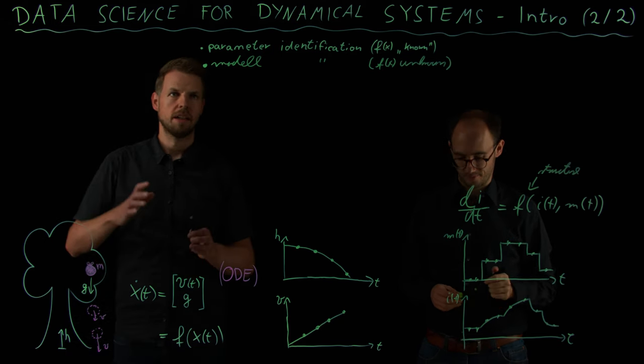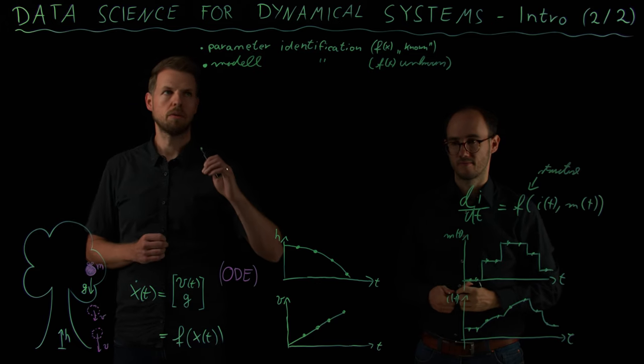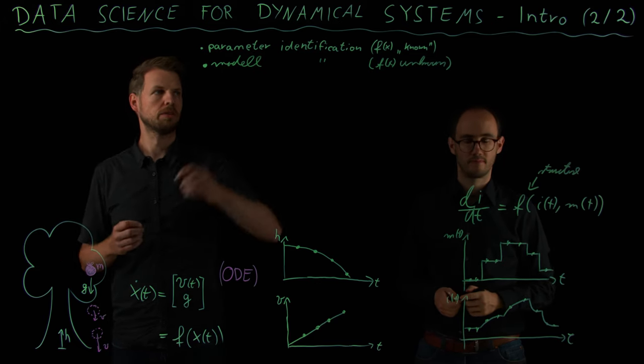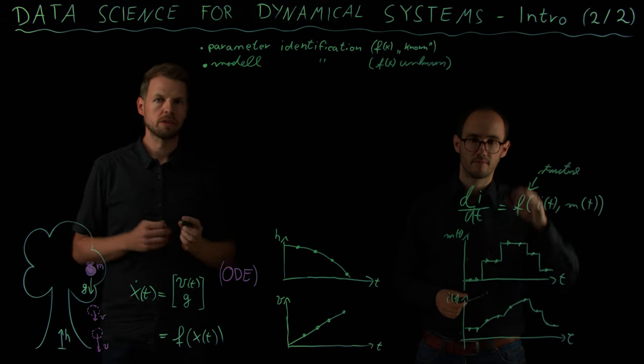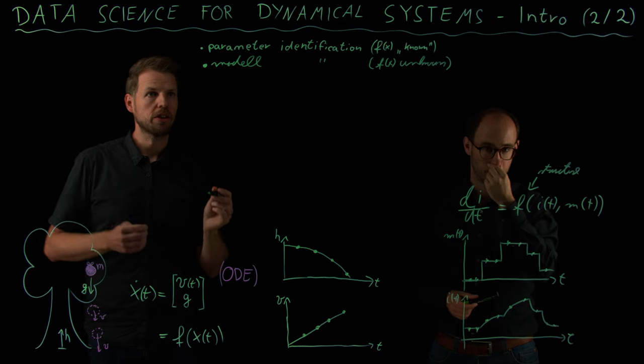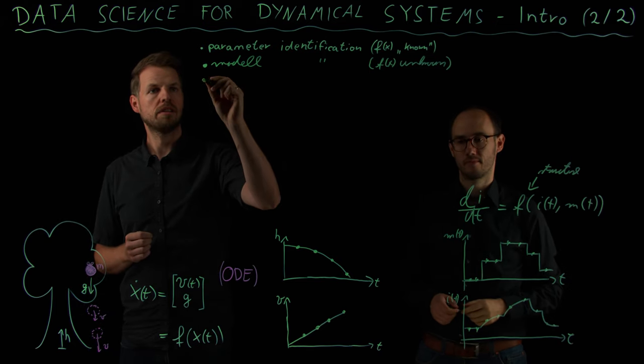So these are two extreme situations. We first know the right hand side altogether, just a few parameters are unknown. Or we know nothing about the system. But there are, of course, also intermediate situations which we denote by residual identification.